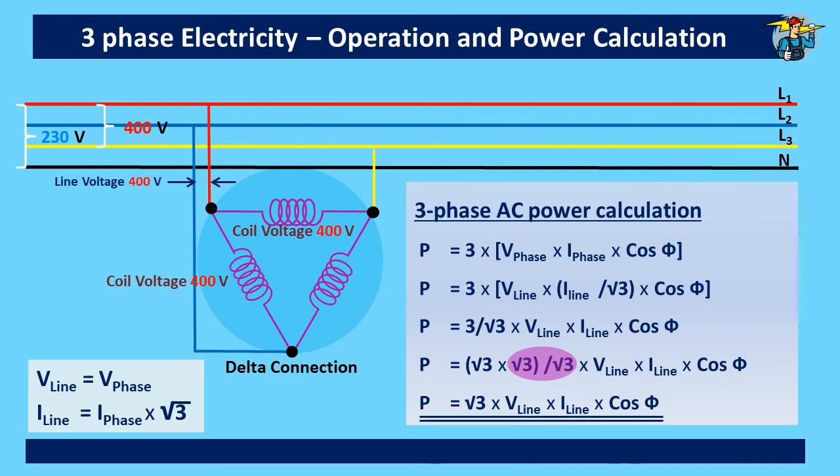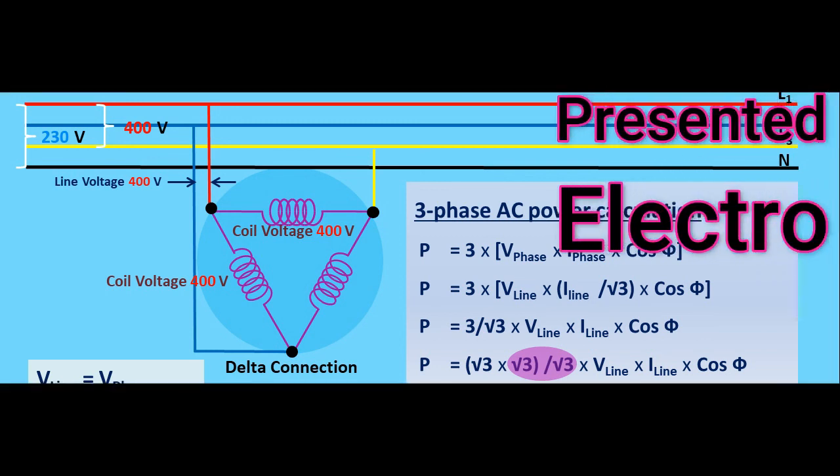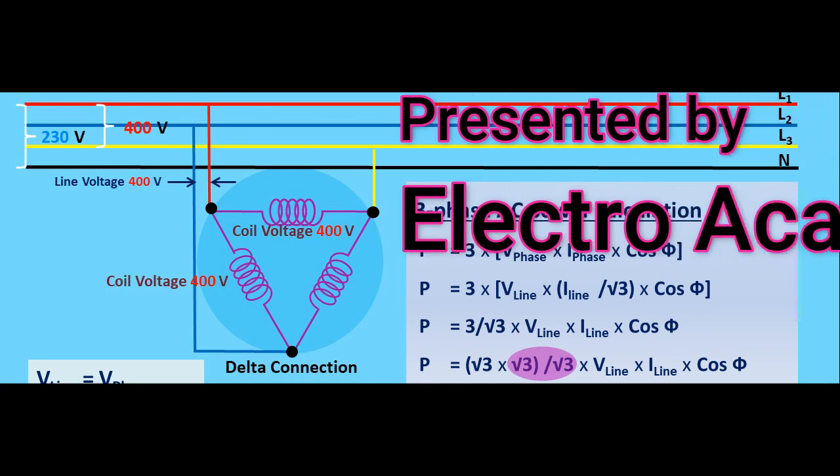Here too, the final equation for three phase power in watts is P = √3 × V_line × I_line × cos φ. So you will understand now from where this multiplying with square root three comes from for three phase alternating current power calculations. If you think that this video is helpful, please subscribe to the channel. Thank you.